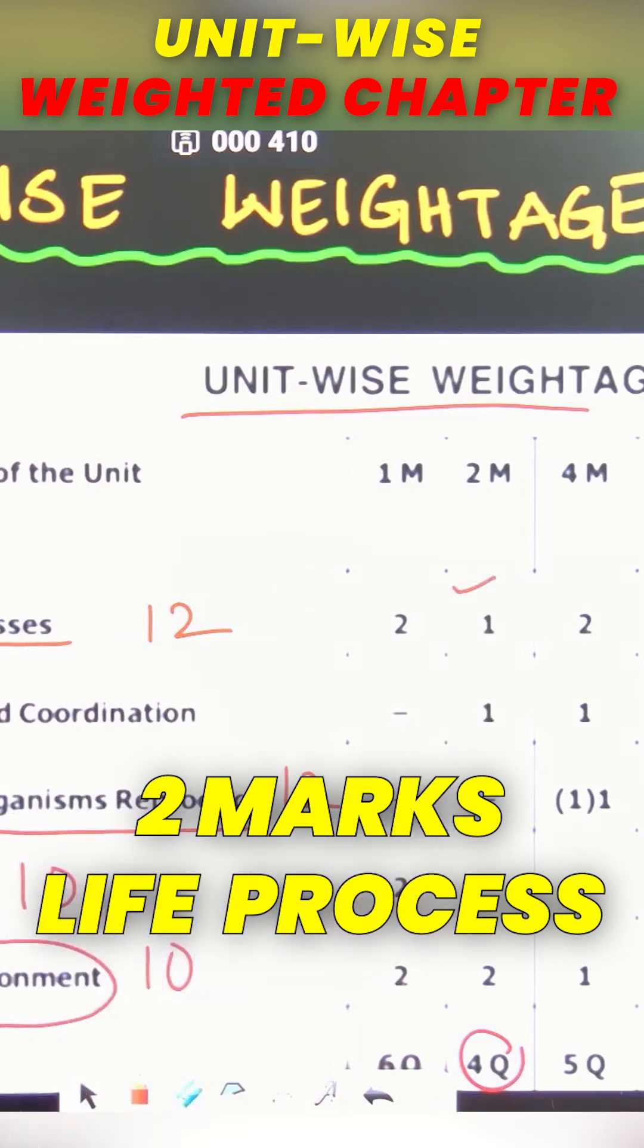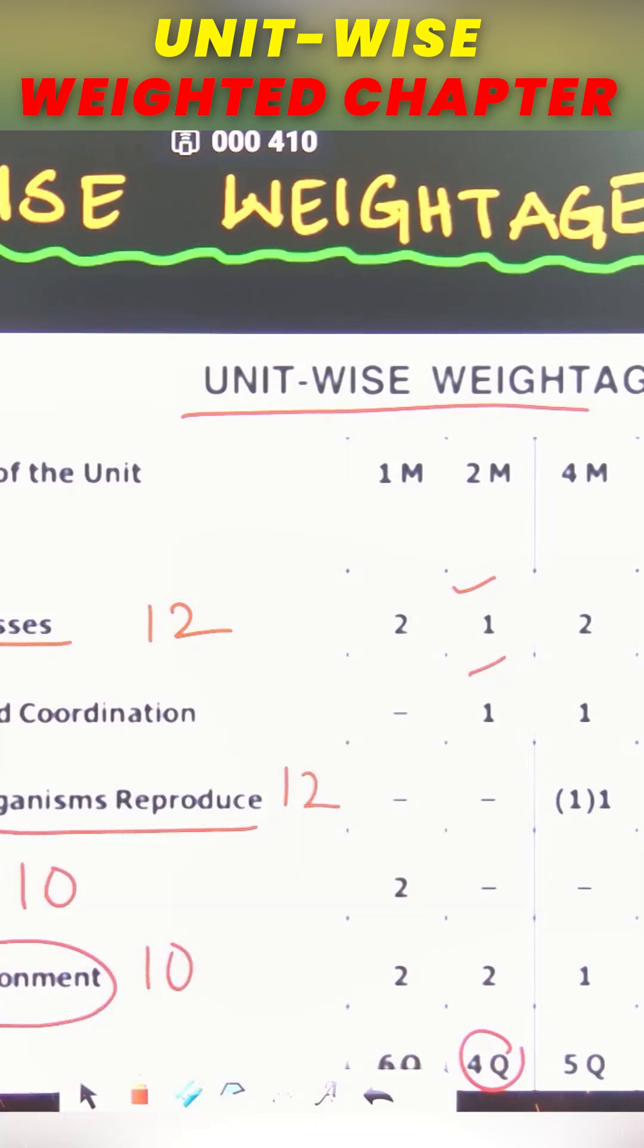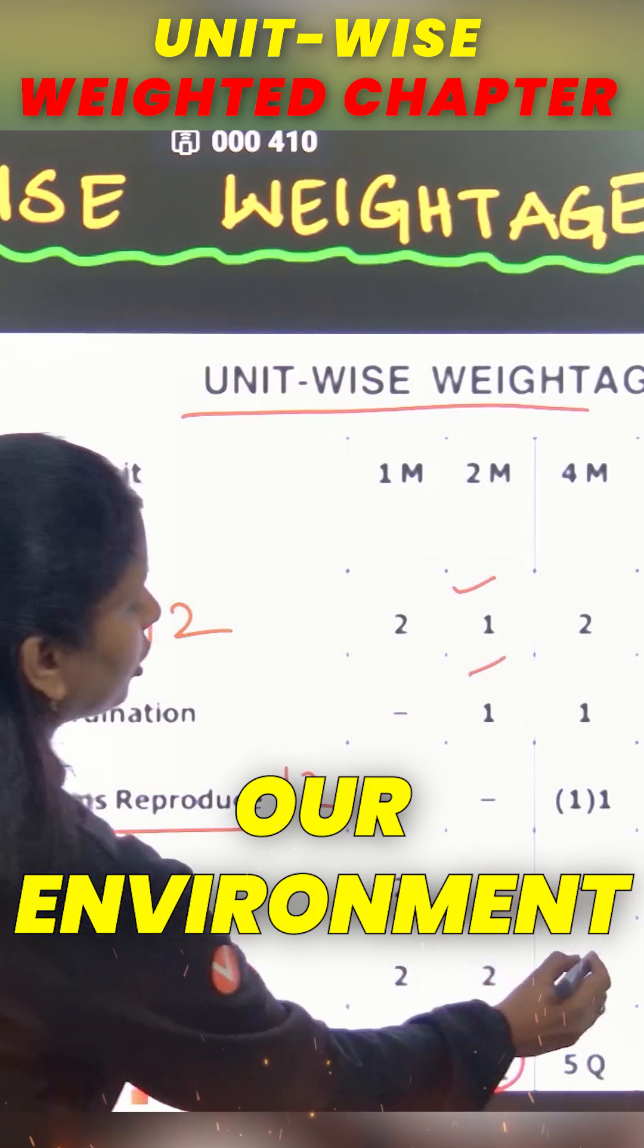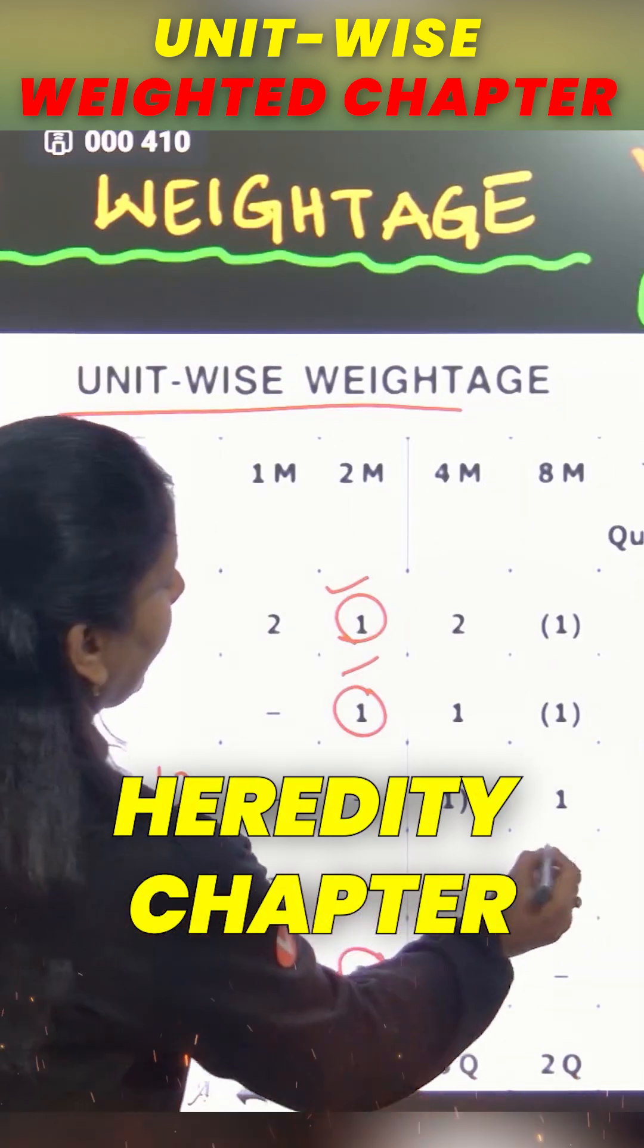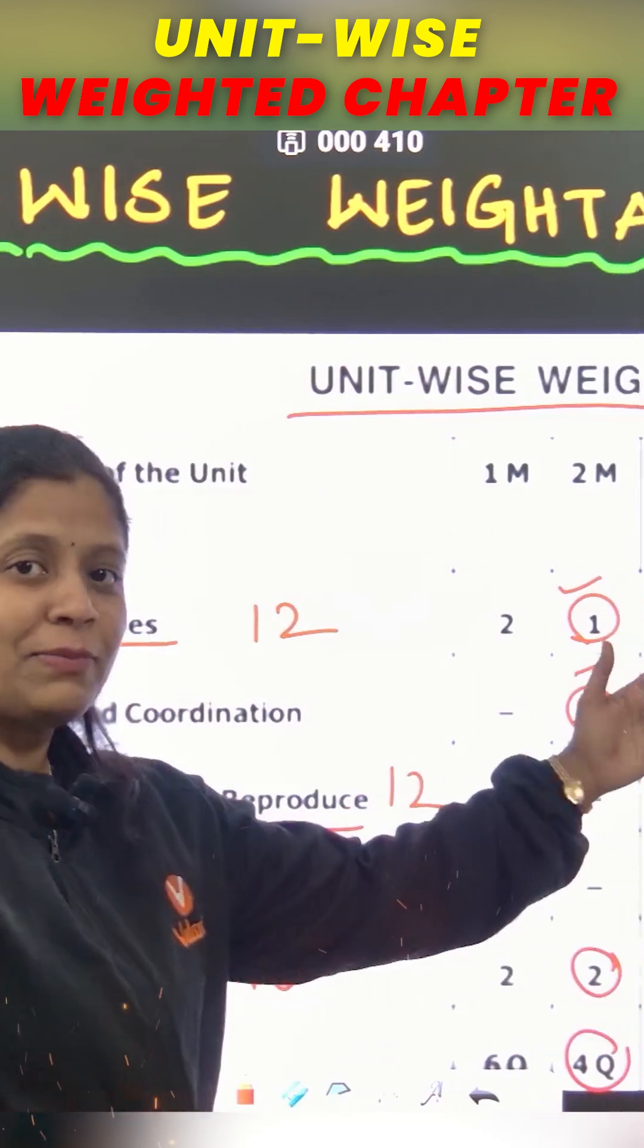Life processes will be 2 mark, control and coordination will be 2 mark, and our environment will be 2 mark. Heredity chapter, 1 8 mark question will be there. 1 8 mark question from life processes, that will be in internal choice.